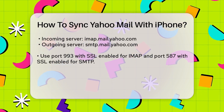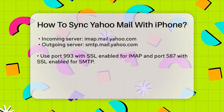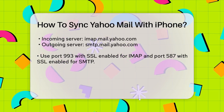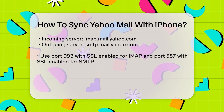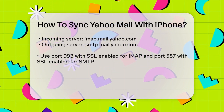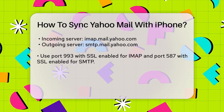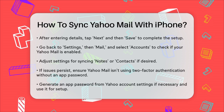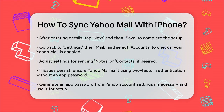Once you've entered these details, tap Next and then Save. Your Yahoo Mail account should now be synced with your iPhone. To ensure that your emails are syncing properly, go back to the Settings app, then to Mail, and select Accounts. Choose your Yahoo Mail account and make sure that Mail is enabled. You can also adjust other settings like Notes or Contacts if you want to sync those as well.